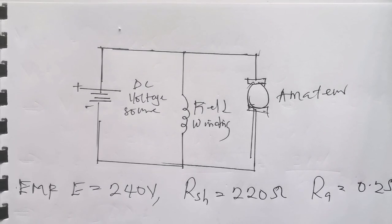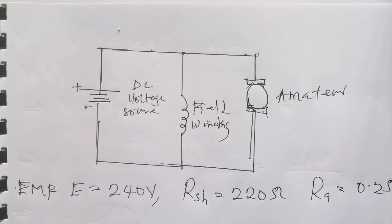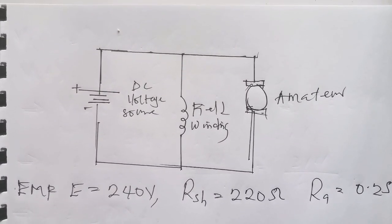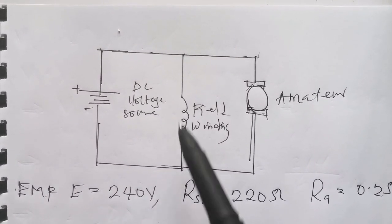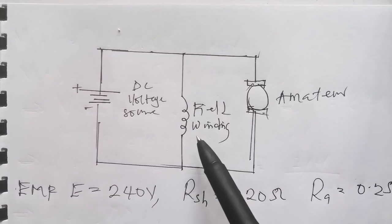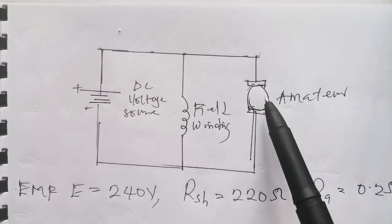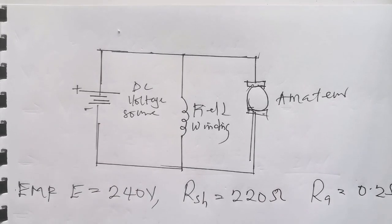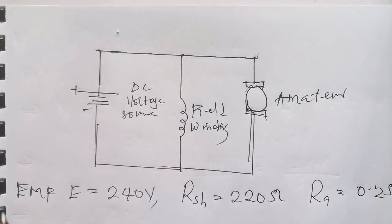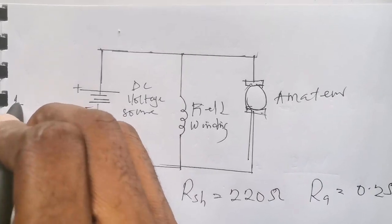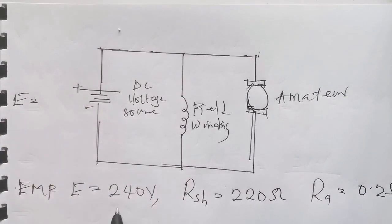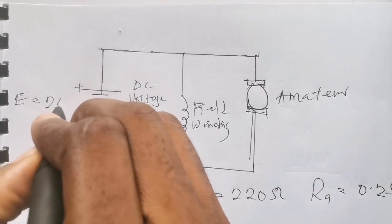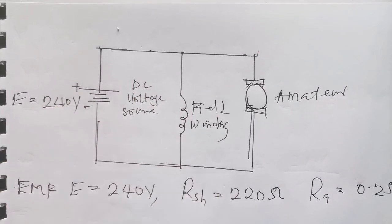Now these are the given parameters. This is the diagram of the DC shunt motor — this is the shunt field winding, this is the armature, and this is the source powering the motor itself. From the question, source E was given as 240 volts, which is the electromotive force powering the entire motor.